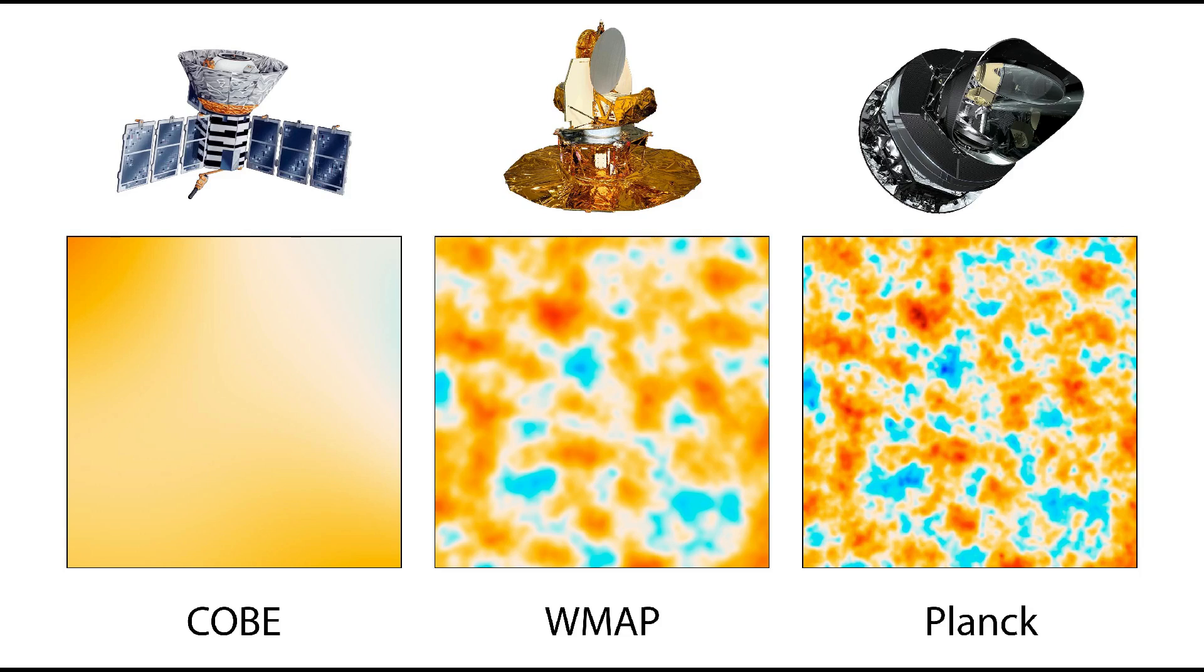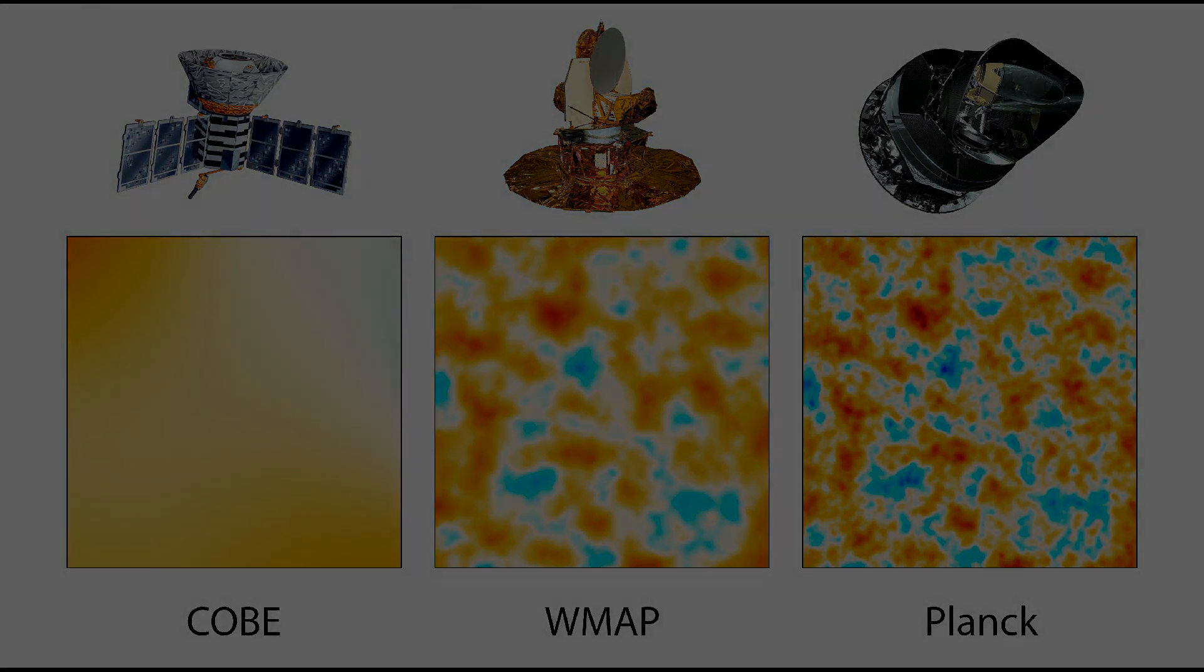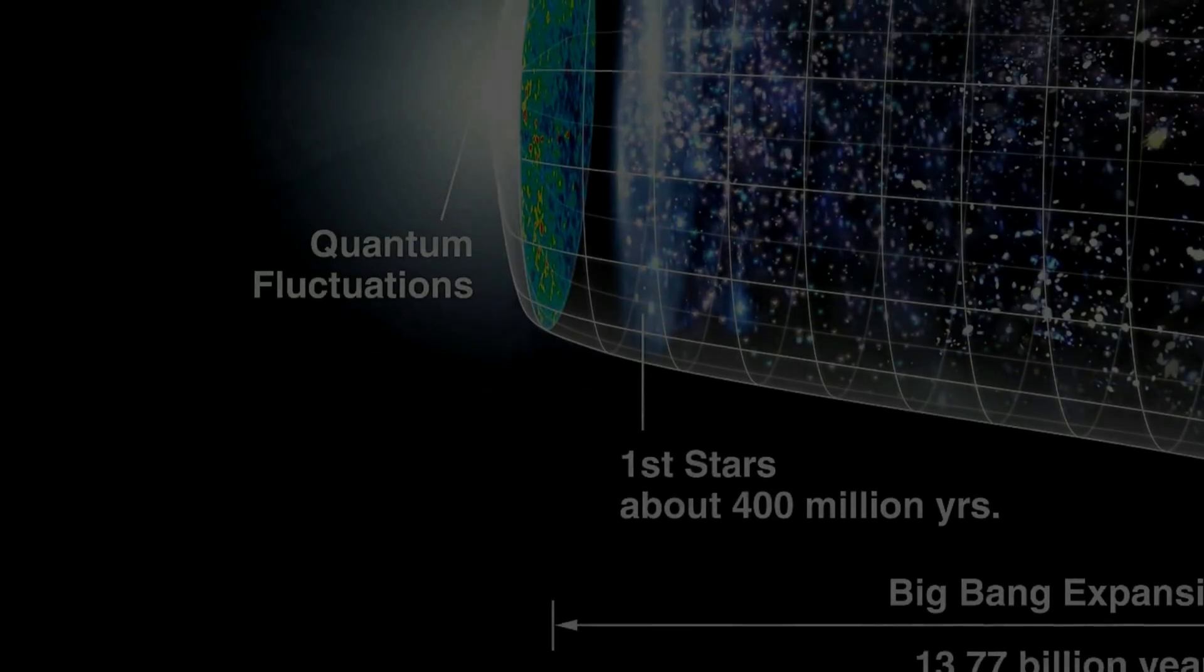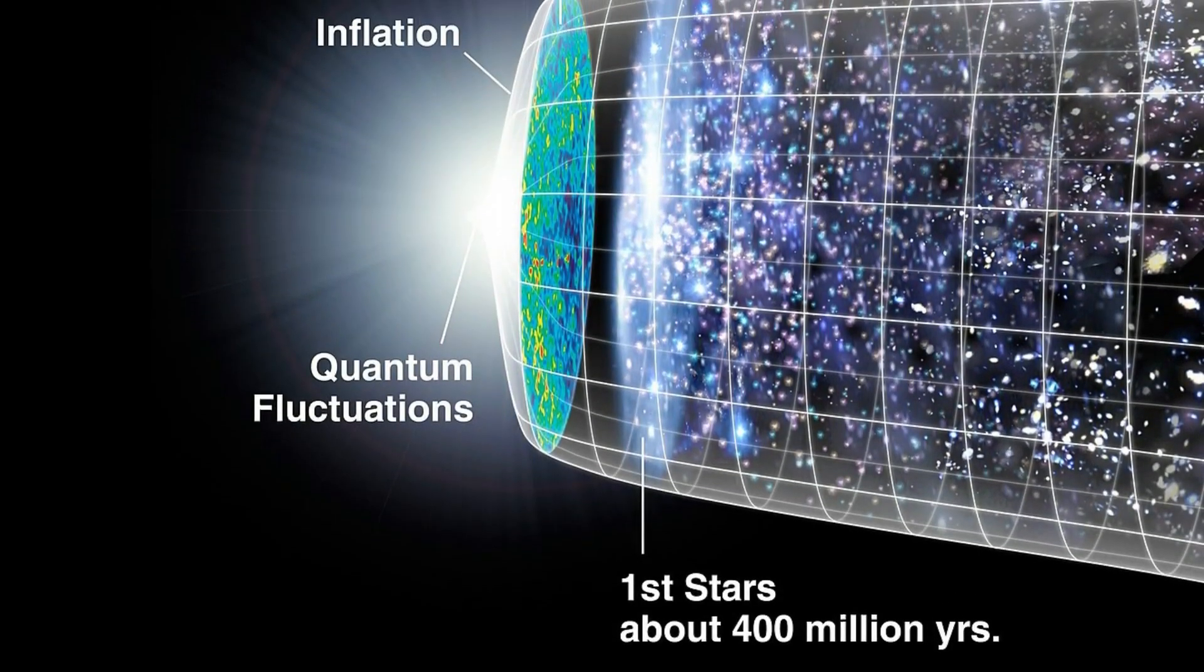In 1980, Alan Guth, Alexei Starobinsky, and Andrei Linde worked out a theory known as cosmic inflation. It is an extension to the Big Bang theory which addresses all these problems.